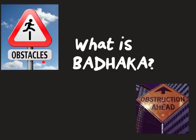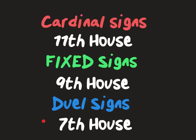Overcoming obstacles in life will always lead to success. The first step is to identify the Baddaka house in your chart. We're looking at the D1 birth chart from the ascendant only. For cardinal signs rising — Aries, Cancer, Libra, and Capricorn — it's the 11th house. For the fixed rising signs — Taurus, Leo, Scorpio, Aquarius — it's the 9th house. And for the dual or mutable signs — Gemini, Virgo, Sagittarius, and Pisces — it's the 7th house. Nothing in Vedic astrology is random; there is a definite rationale for these house placements being Baddaka.